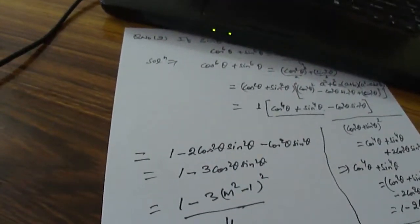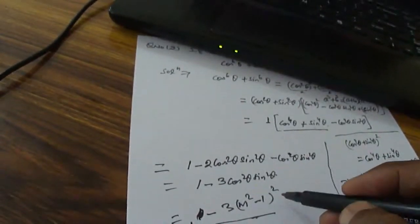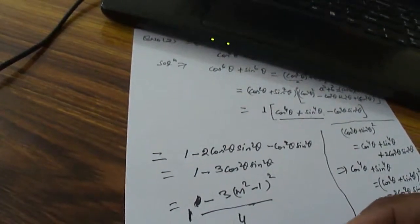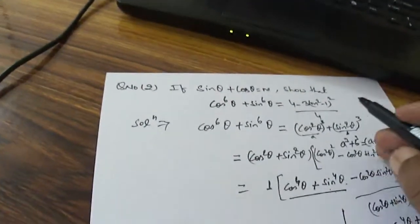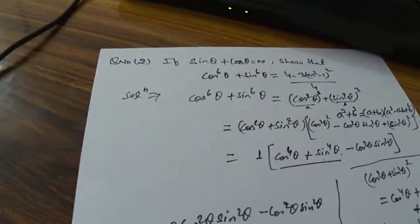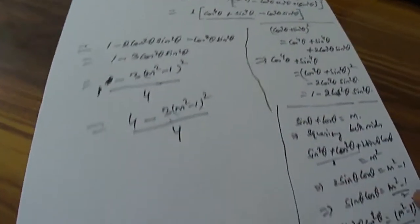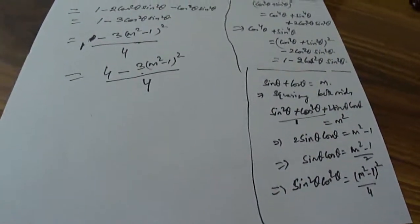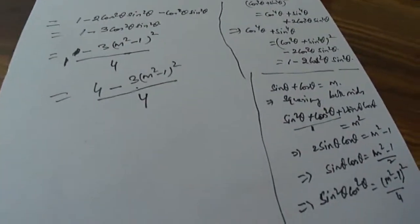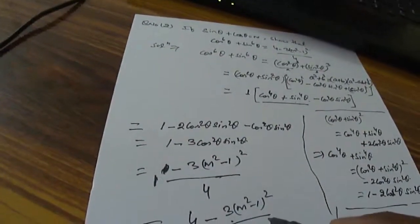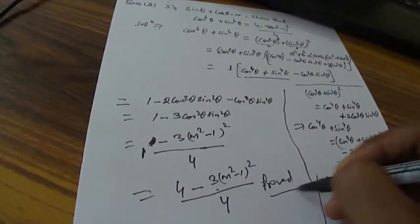So we can write this as (4 minus 3(m²−1)²) divided by 4, and that is exactly what we needed to show. Step by step, using algebraic identities together with the trigonometric identity sin squared θ plus cos squared θ equals 1, we have used all those identities and have been able to prove the result.